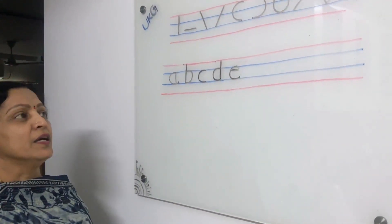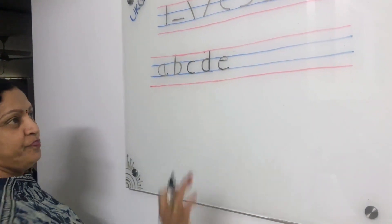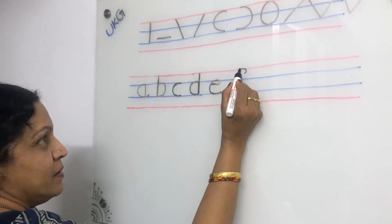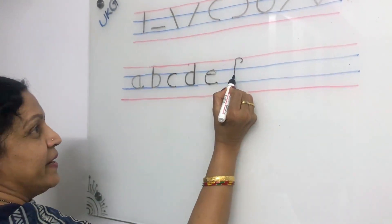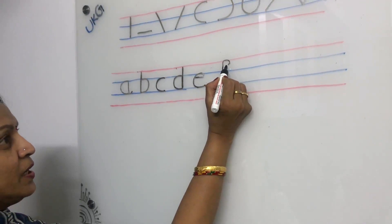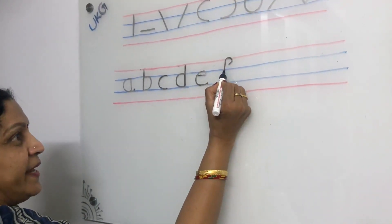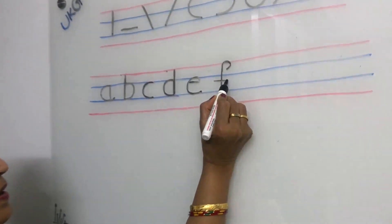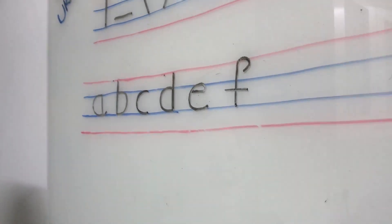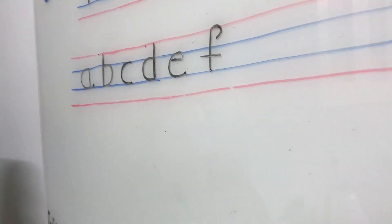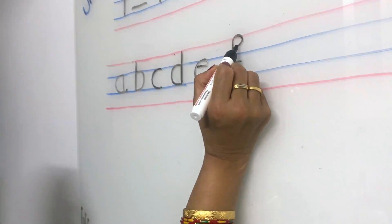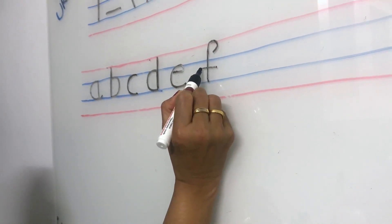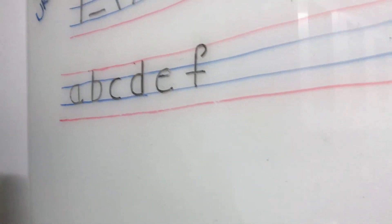Now we are writing small F. Small curve joining standing line, and small sleeping line in the middle of the standing line makes small F.